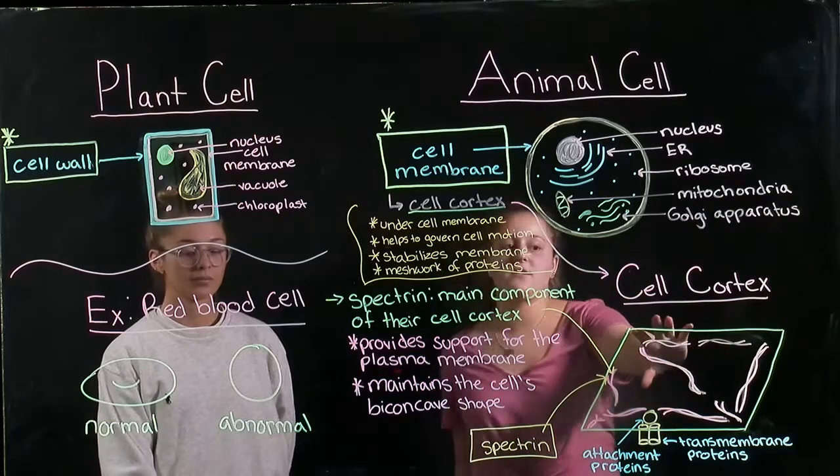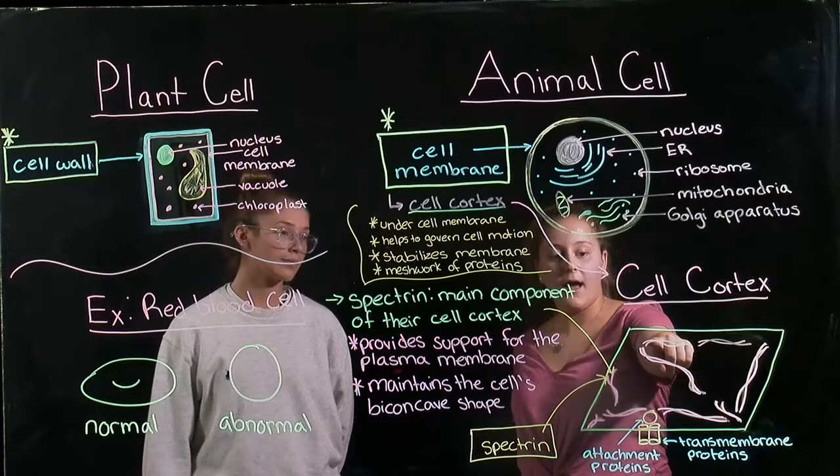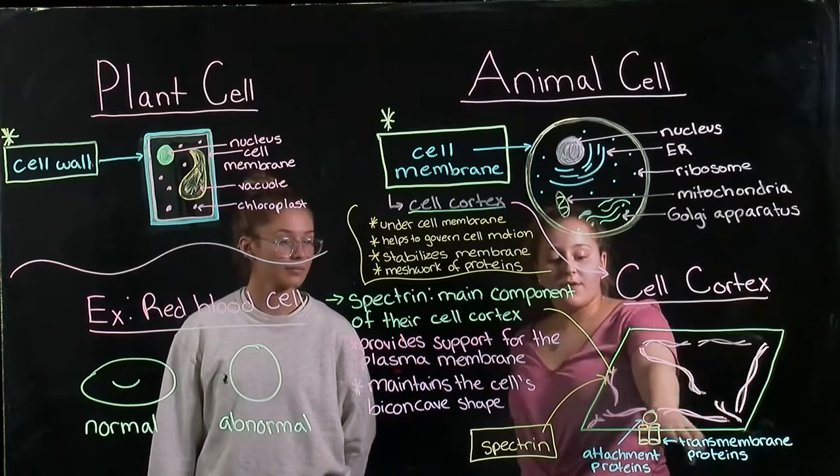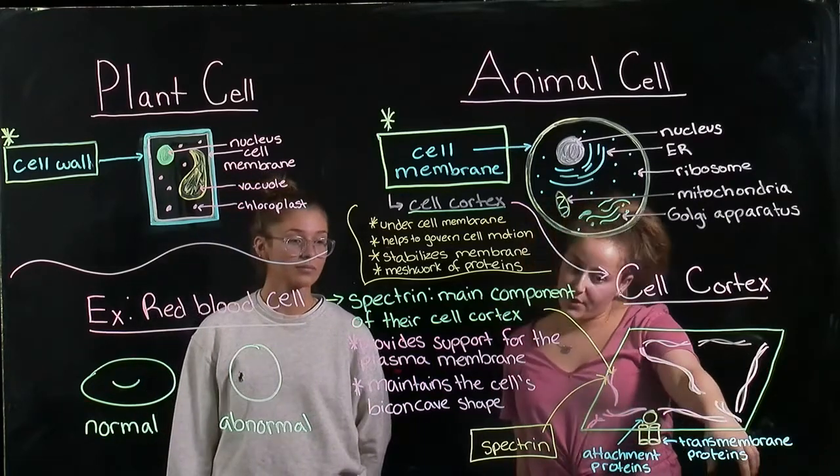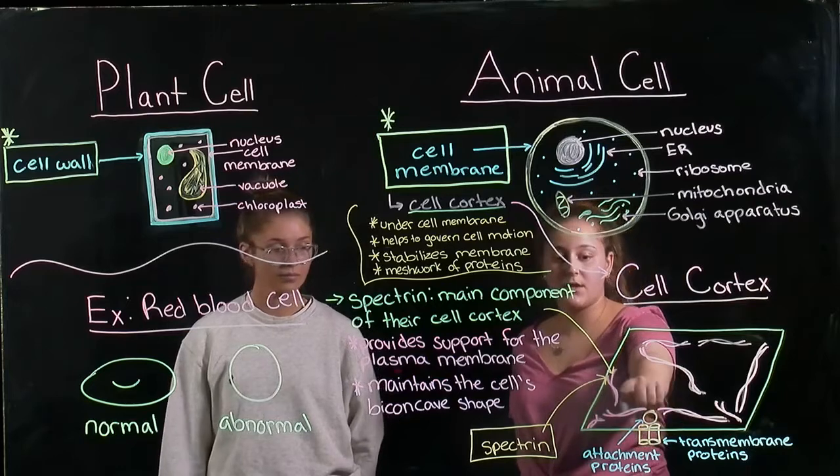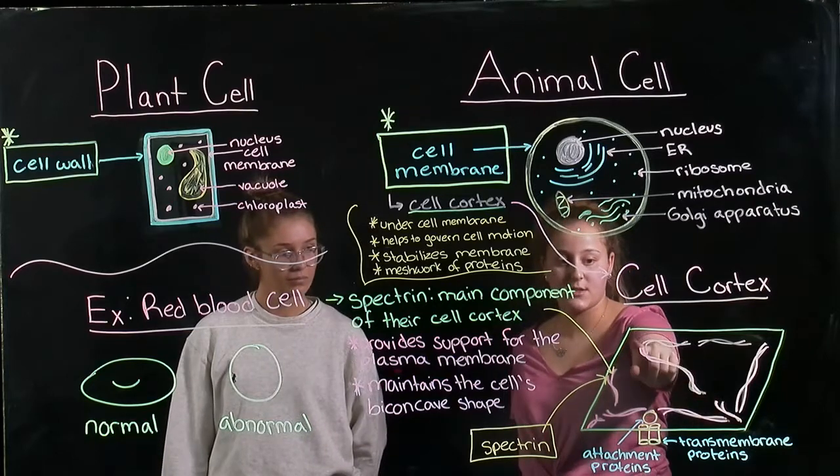This is a diagram of the cell cortex. Other than attachment proteins and transmembrane proteins which are right here, we see spectrin which are these squiggly lines.